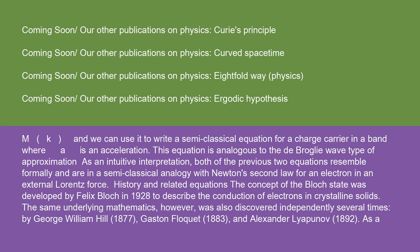History and related equations. The concept of the Bloch state was developed by Felix Bloch in 1928 to describe the conduction of electrons in crystalline solids. The same underlying mathematics, however, was also discovered independently several times by George William Hill (1877), Gaston Floquet (1883), and Alexander Lyapunov (1892). As a result, a variety of nomenclatures are common.